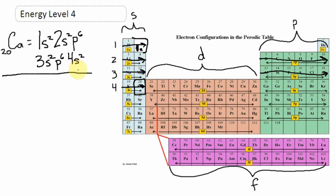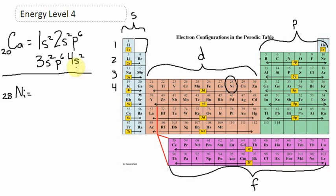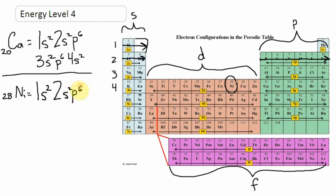I'm using the periodic table to help me figure out where they're located. The next element we're going to take a look at is element number 28, nickel. Nickel has 28 electrons and 28 protons — let's place them. First energy level, as we know by now, will hold two electrons. The second energy level, the s orbital can hold two electrons too — 1, 2 in the s orbital.